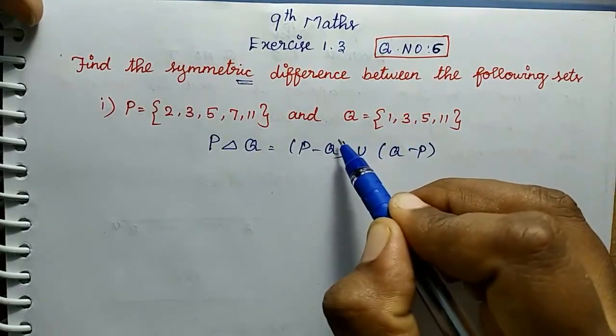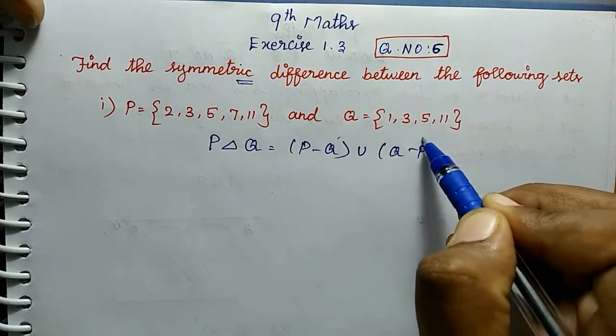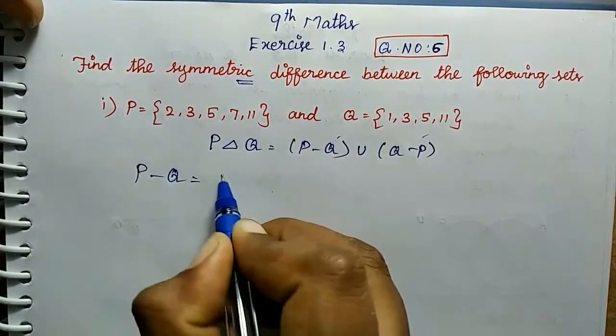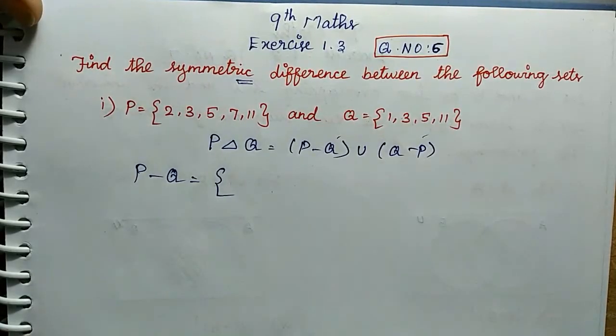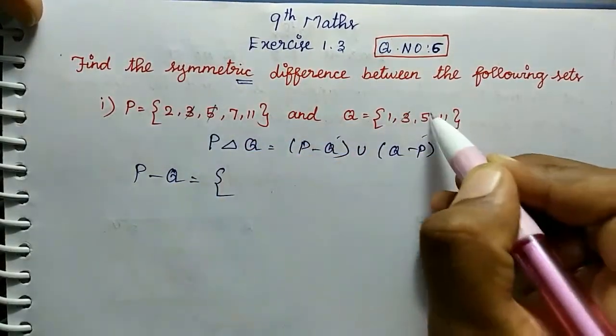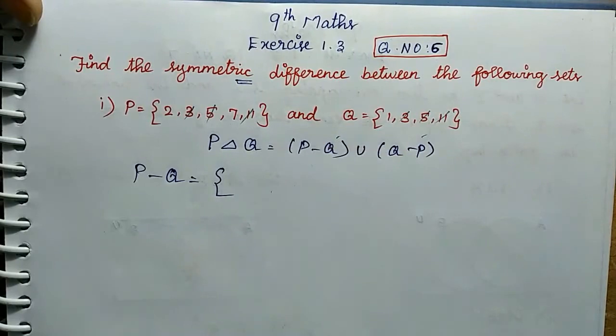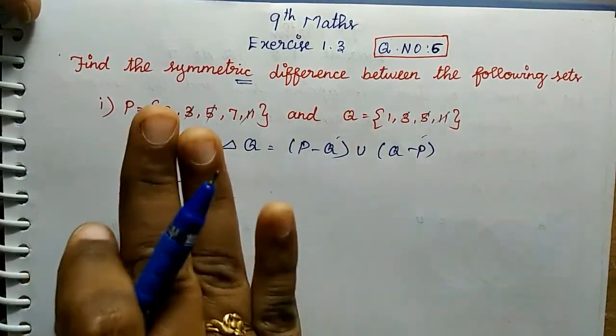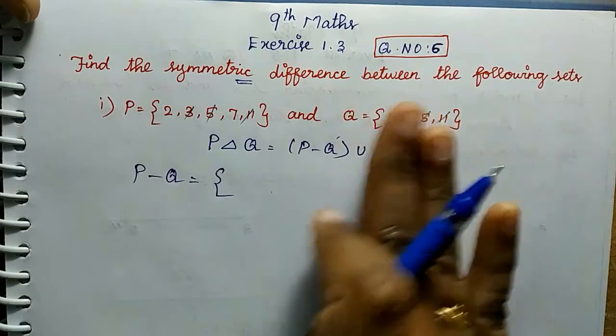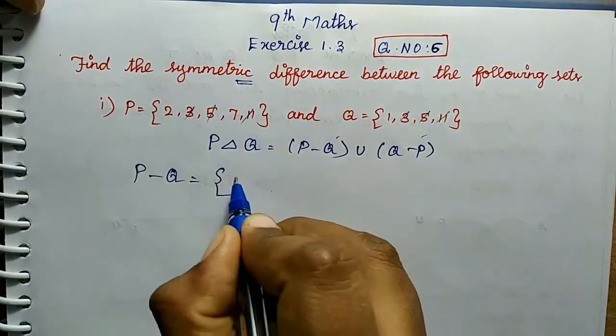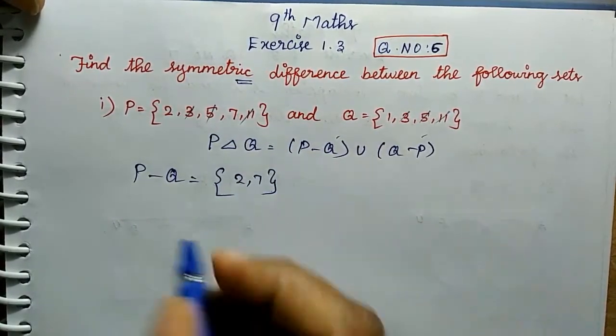So if we first find P minus Q. We identify the common elements - Q is the same. So P minus Q set, one thing we will subtract. Remaining values is 2, 7. We will subtract.